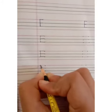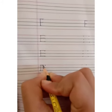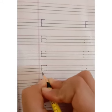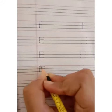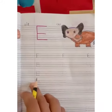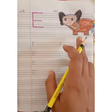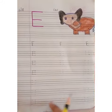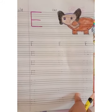Again, first standing line, after that one sleeping line, two sleeping line and three sleeping line. This is E. E for Elephant. E for Elephant. Now complete your copy and send it to me.